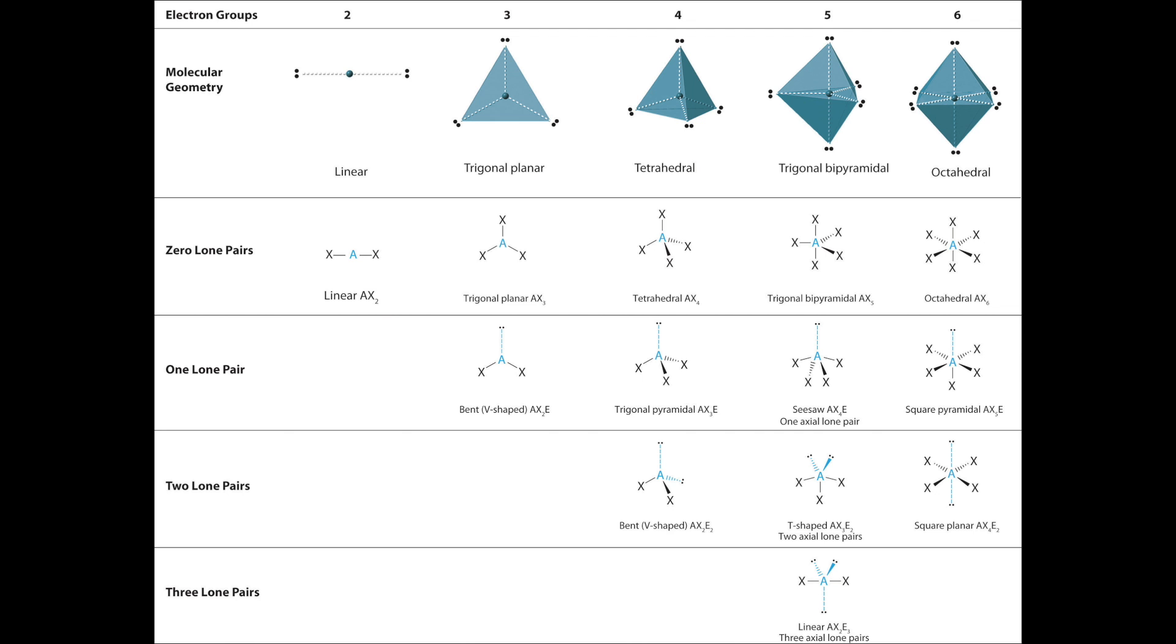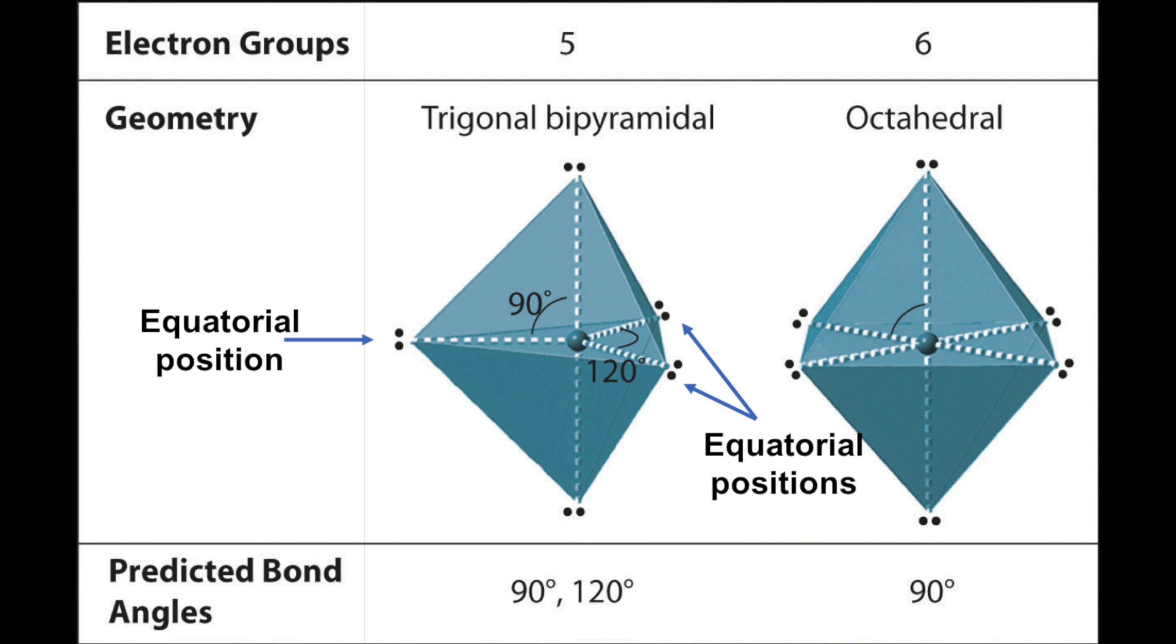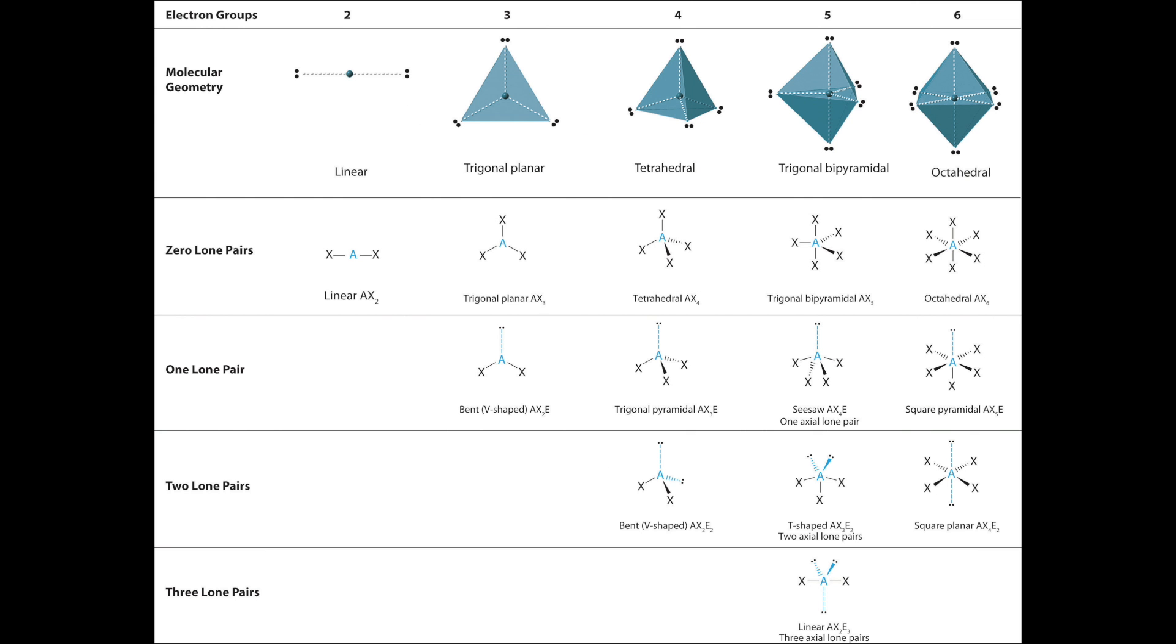Remember, with a trigonal bipyramidal geometry, you have both axial and equatorial positions. By placing electrons on the equatorial position, you reduce the electron-electron repulsion. This is why we end up with a seesaw, T-shaped, and linear geometries.